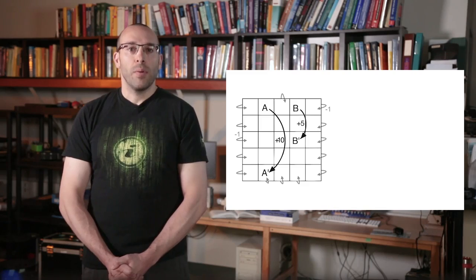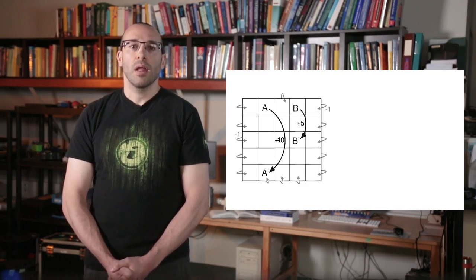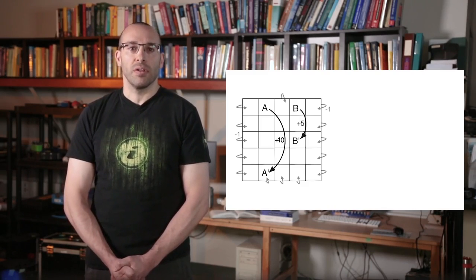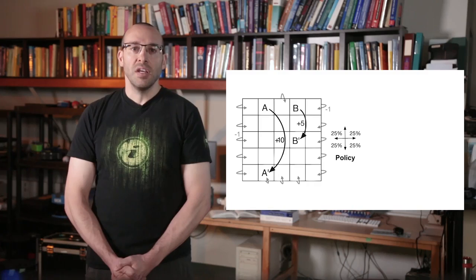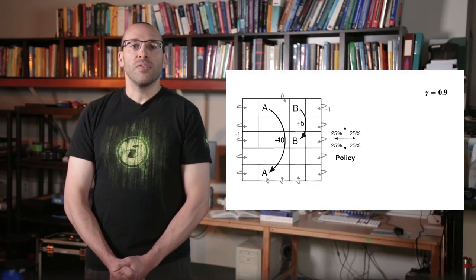Remember, we must specify the policy before we can figure out what the value function is. Let's look at the uniform random policy. Since this is a continuing task, we need to specify gamma. Let's go with 0.9.